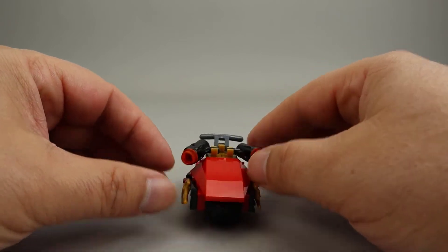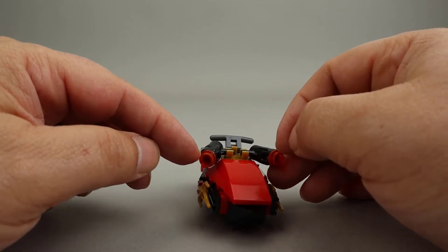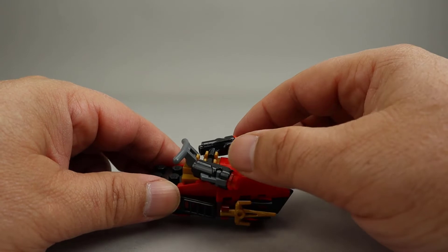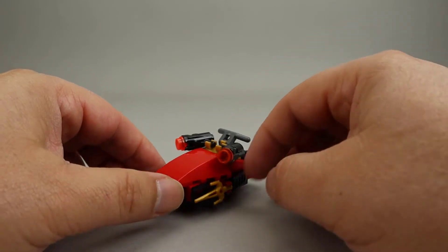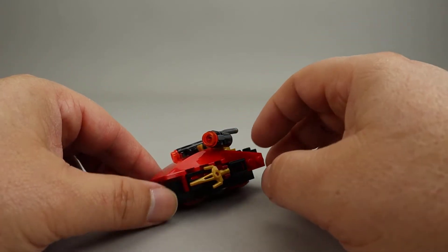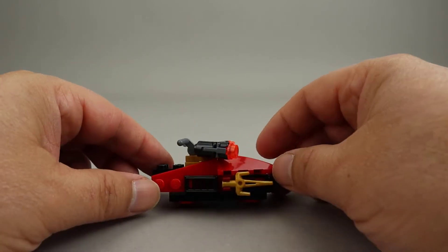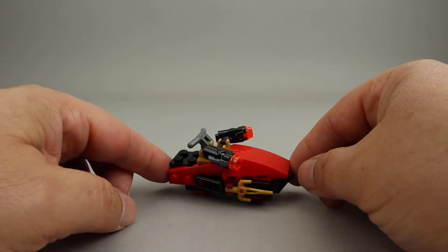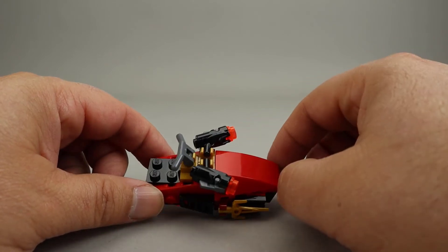It has the handlebars here, two stud shooters with nice trans-orange studs, and then this sai on either side here that are connected to give it a little bit more decoration. Overall I think it's a pretty good little design, pretty aerodynamic with this hood piece here.